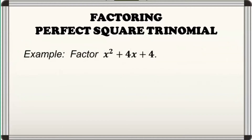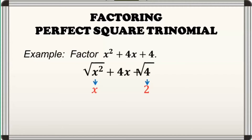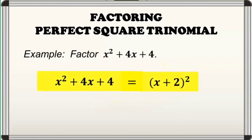Let's factor x squared plus 4x plus 4. If we'll check, it's a PST, so we can now proceed in applying the steps in factoring it out. Taking the square roots of the first and last terms, we have x and 2 respectively. We now use the square roots in making a square of binomial together with the sign of the middle term. So, we have quantity x plus 2 squared. It is the factored form of our given PST.